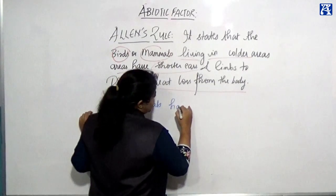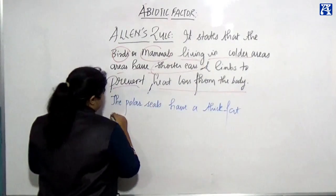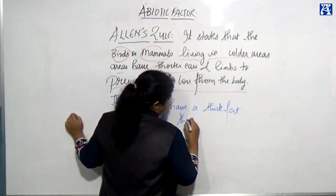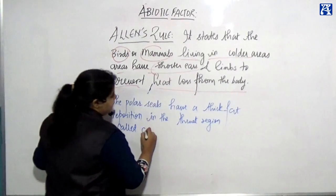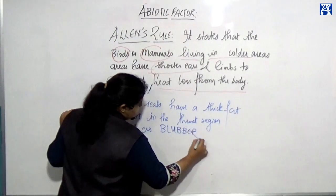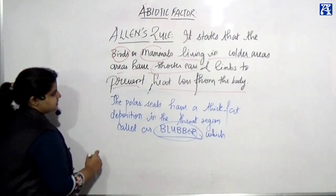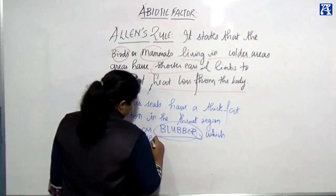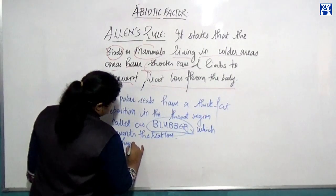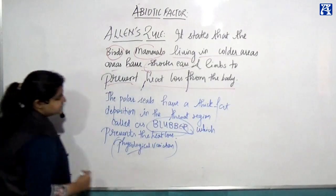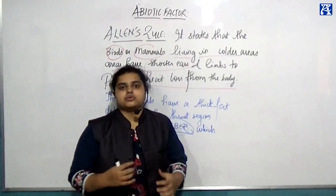One example of physiological variation: polar seals have a thick fat deposition in the throat region called blubber, which prevents heat loss from the body. This is called a physiological variation because the physiology of the organ system has been modified — not the morphology.